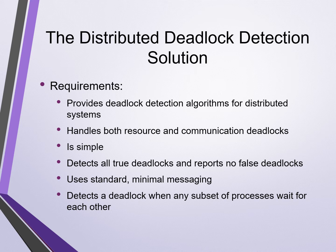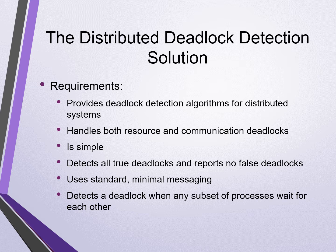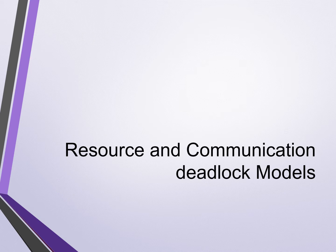In their paper, Chandi, Misra, and Haas provided a distributed deadlock detection solution. This is the list of requirements and issues they're looking to solve: the solution must provide deadlock detection algorithms for distributed systems, it must handle both resource and communication deadlocks, the algorithm must be simple, all true deadlocks must be detected, and no false deadlocks recorded. It must have minimal effect on process speed using standard minimal messaging. And finally, it must also detect the deadlock when any subset of processes waits for each other. We'll deal mainly with the resource model; I'll touch briefly on the communication model but won't go into the same depth.